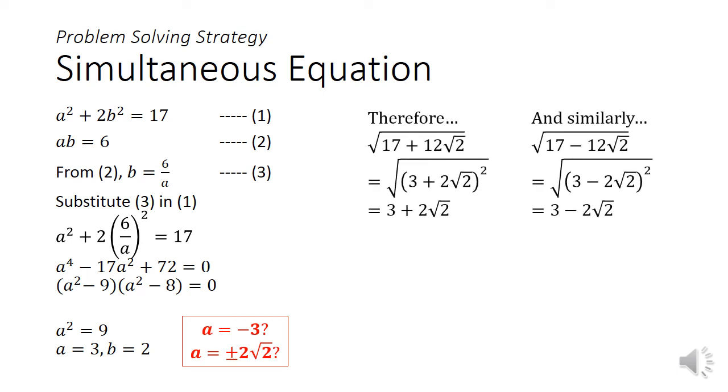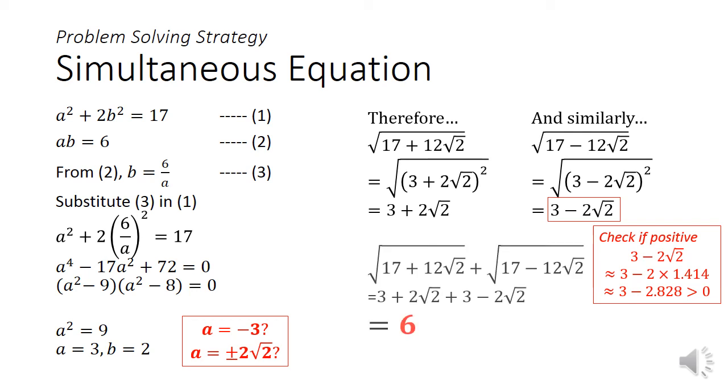More importantly is that I can simplify 17 plus 12 root 2 as 3 plus 2 root 2, and using a similar argument, the root of 17 minus 12 root 2 can be simplified as 3 minus 2 root 2. It is important that since we are taking the positive root, that 3 minus 2 root 2 is positive, so you can check this using the decimal estimates that I've highlighted in the previous part of the lecture. Finally, putting the two terms together, the root 2's will cancel each other out, and you will get 6.